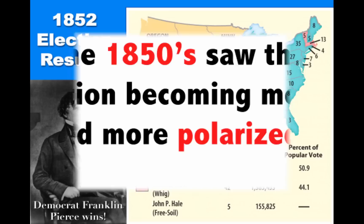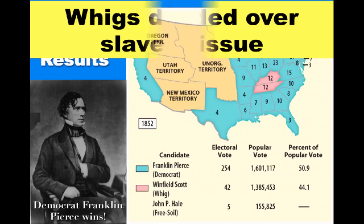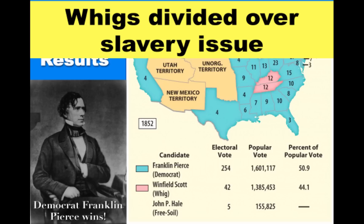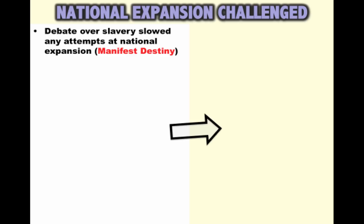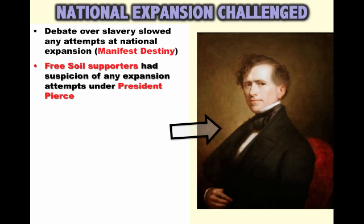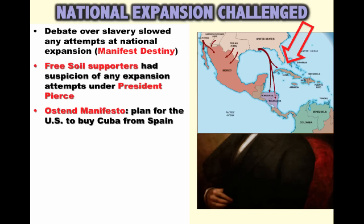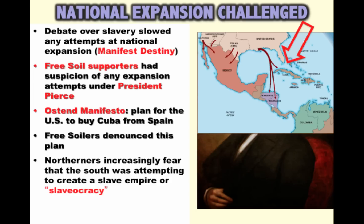In 1852, there's another election. The Democrats pick Franklin Pierce and he wins. The Whig Party is truly divided over the issue of slavery, as Northern Whigs oppose the Fugitive Slave Act and Southern Whigs don't. Any attempts to expand the nation become increasingly challenging. The debate over slavery slowed Manifest Destiny. Free Soilers are suspicious of any expansion under Franklin Pierce. For instance, when a group of Southerners plan to buy Cuba from Spain and turn it into a slave state, news of that plan is leaked to the press. Free Soilers and Northerners denounce the plan, increasingly fearing that the South is attempting to create a slave empire, so any attempts to acquire Cuba are immediately condemned by the North.